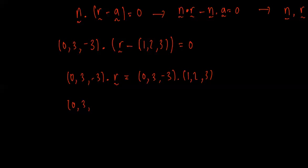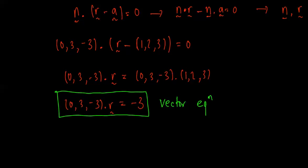So, (0, 3, -3) dotted with r is equal to 0 times 1 is 0, plus 3 times 2 is 6, minus 9, so, negative 3. And then we have it. That is the vector equation of a plane. So, vector equation of a plane. Okay, in the next video, we'll look at how to find the Cartesian and parametric form.